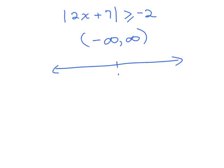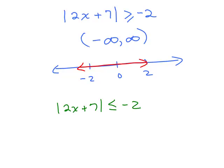On a number line, everything works — it's kind of cool. All you really need to know is what absolute value stands for: distance from 0 on the number line. As a little review: what if it was absolute value of 2X plus 7 less than or equal to negative 2? That's when there's no solution, because we know the absolute value is going to be bigger than or equal to 0 — it's impossible. So this is no solution, the null set.